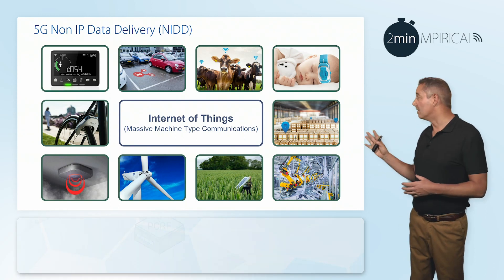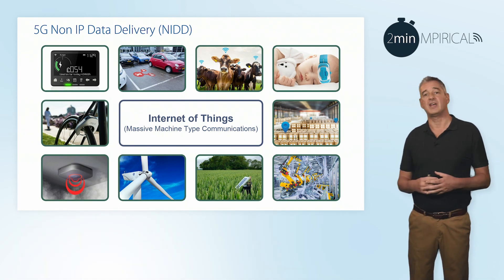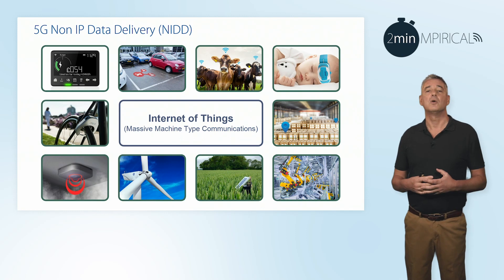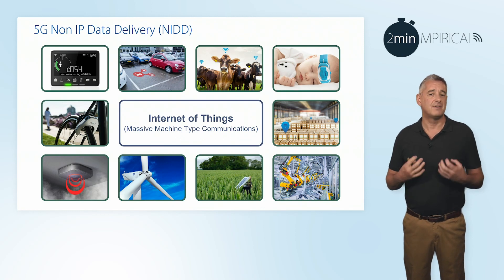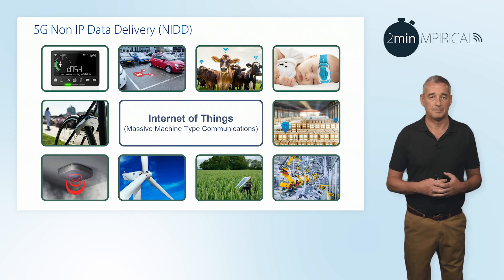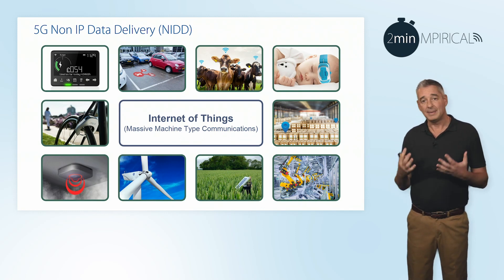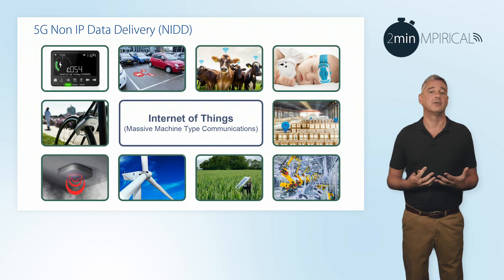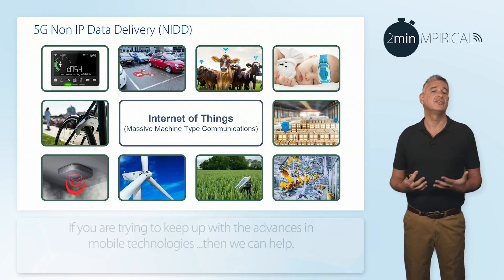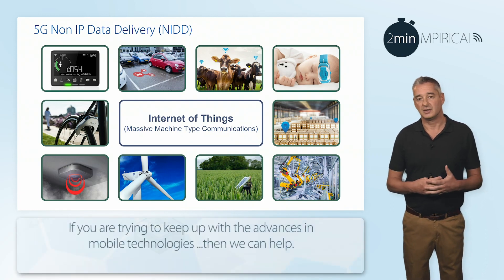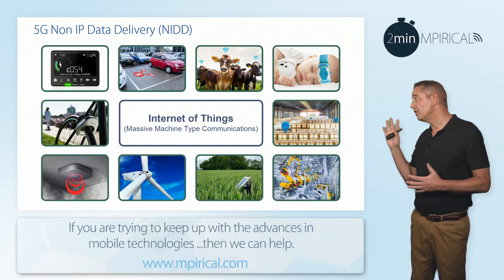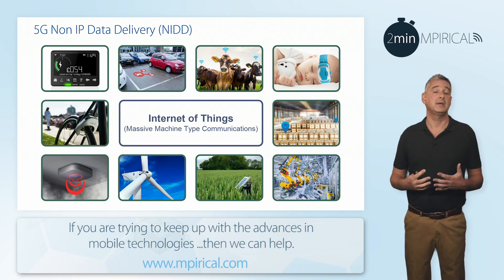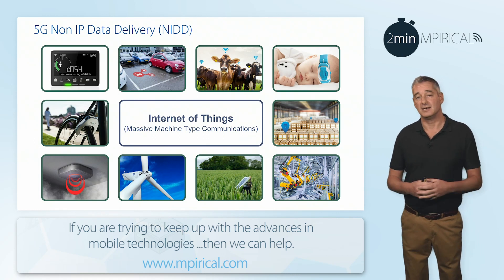However, for a lot of this data, the actual volume that we need to send will be typically very small. So wrapping it up inside an IP datagram can be considered to be very inefficient. Hence the term NIDD, or non-IP data delivery.